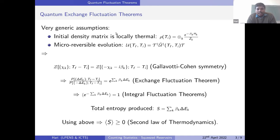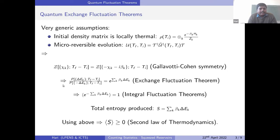Under very generic assumptions that the initial density matrix is locally thermal-like and the evolution is micro-reversible — where T is the time reversal symmetry operator — one can derive generic conditions on the moment generating function sometimes referred to as Gallavotti-Cohen symmetry. Here, you take each conjugate parameter for the energy changes and shift them by an imaginary beta_k, which is the inverse initial temperature of that particular subsystem, and it remains invariant.